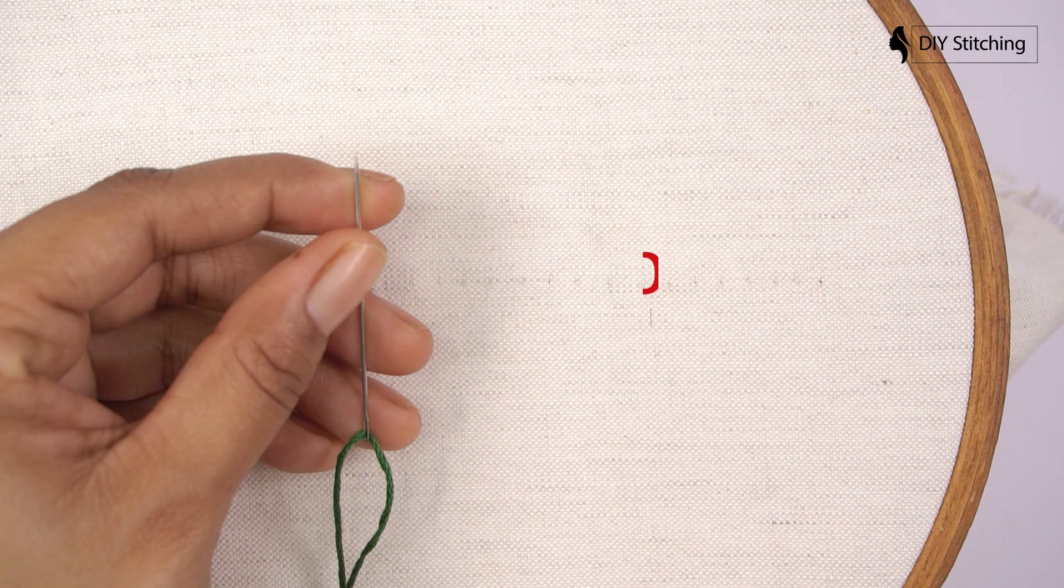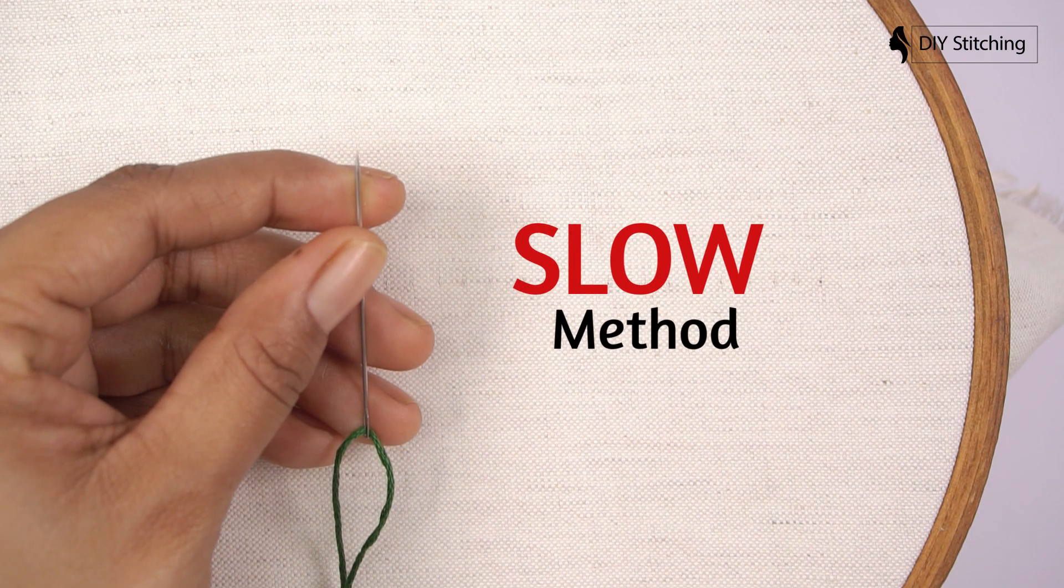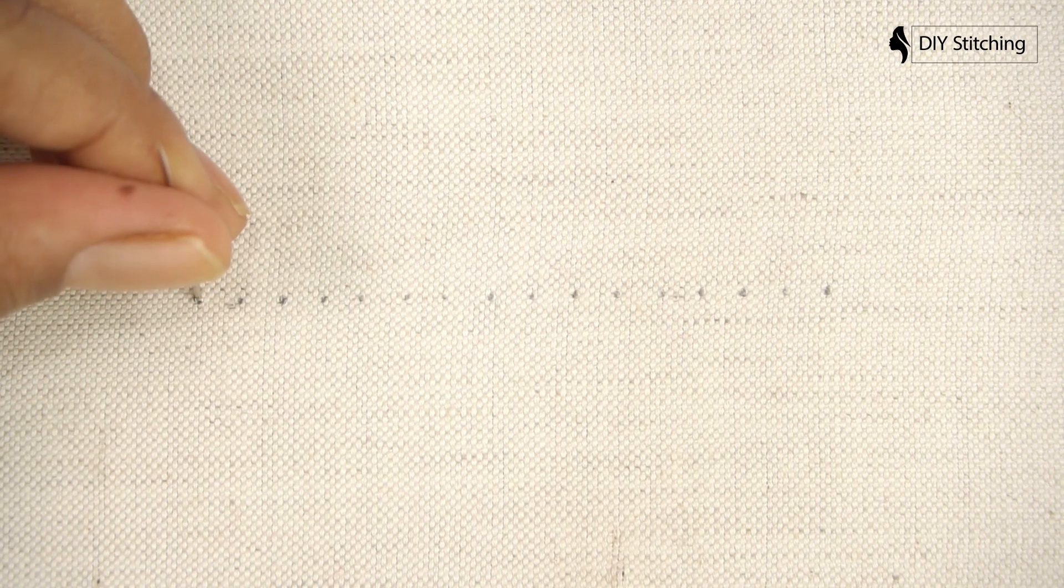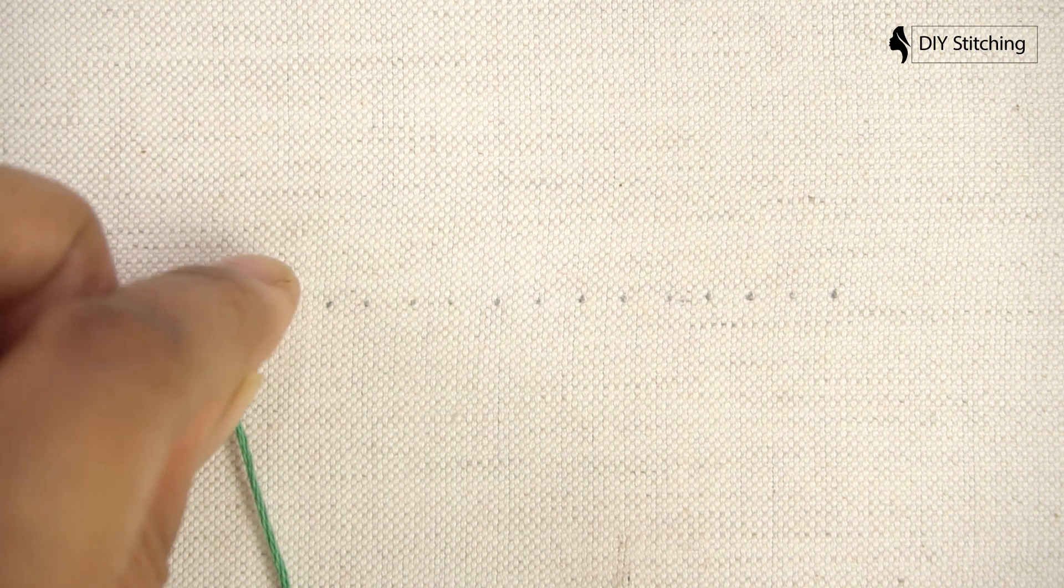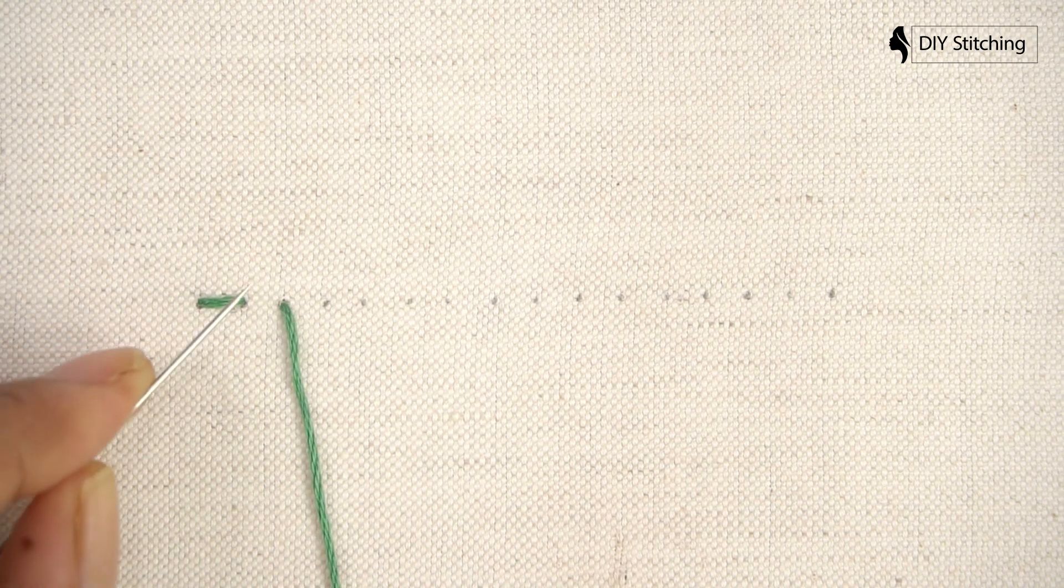Backstitch. Slow methods. When using the stabbing method, you start by bringing the needle up through the fabric. Next, you take the needle back down through the fabric and back up, and so on.